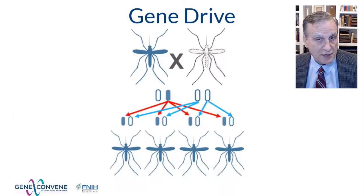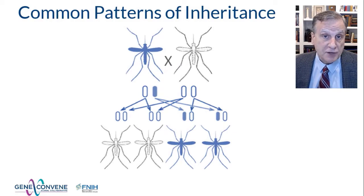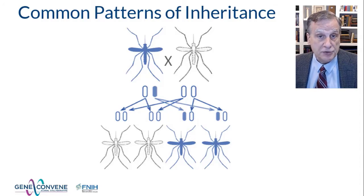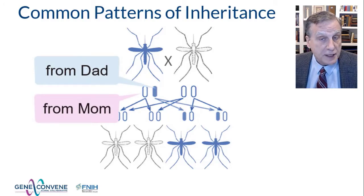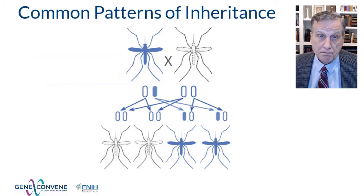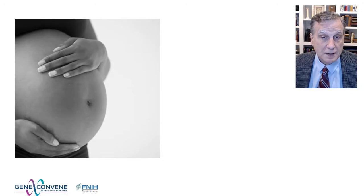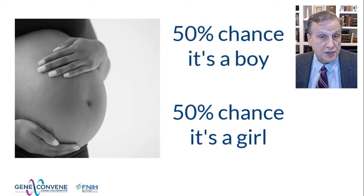Gene drive refers to a genetic process that results in a pattern of inheritance resembling what I am showing you here. Let's back up and bring to mind what we know about basic patterns of inheritance in animals, plants, and insects. The genomes of most animals, plants, and insects contain two copies of every gene — one on a chromosome inherited from the female parent, and one on the chromosome inherited from the male parent. When this organism reproduces, it will pass one of those copies on to each of its offspring. Each copy of the gene has an equal chance of ending up in an offspring. If you were asked what's the chance of a pregnant woman having a baby boy or a baby girl, you would say 50% chance of each.